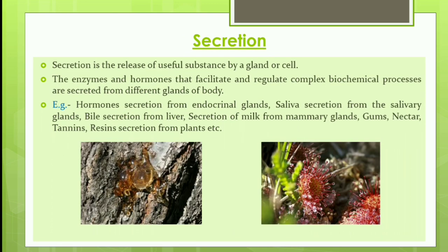The last feature is secretion. Secretion is the release of useful substances by a gland or cell. The enzymes and hormones that facilitate and regulate complex biochemical processes are secreted from different glands of the body. Examples include hormone secretion from endocrine glands, saliva from salivary glands, bile from the liver, milk from mammary glands, and gums, nectar, tannins, and resin from plants.